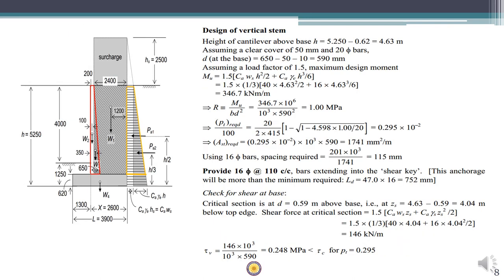Next we will see the design of the vertical stem. First we calculate the height of the vertical stem: 5.25 − 0.62 = 4.63 m, where 0.62 m is the thickness of the base slab. Since the stem is above soil, the clear cover is reduced to 50 mm, and we assume 20 mm diameter bars. The effective depth at the base = total depth (650 mm) − 50 mm clear cover − 20/2 = 590 mm. The load factor for both moment and shear is 1.5, as per LSM.